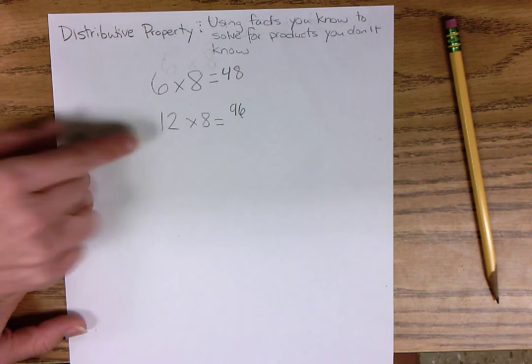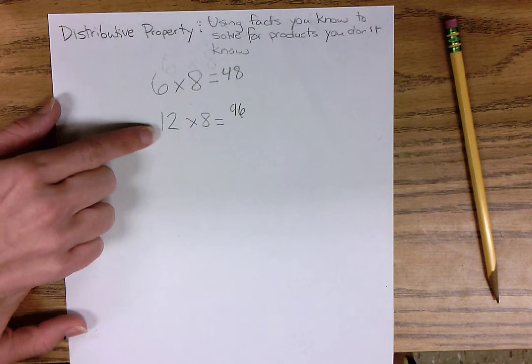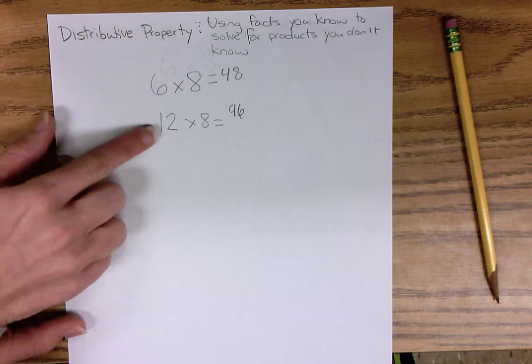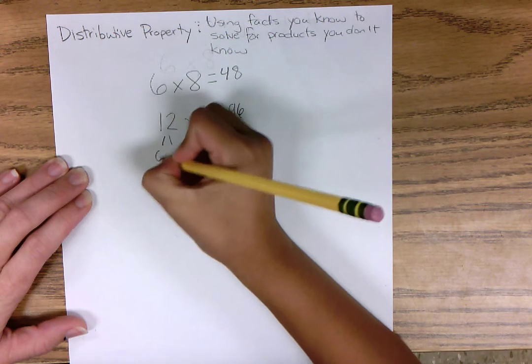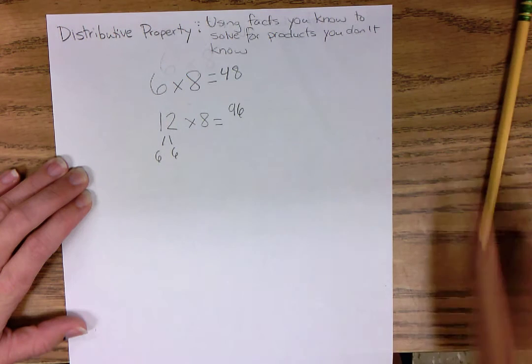So can you explain that a little more? What do you mean there was a 6 in 12? Can you use a number bond and show us what 12 was made of?